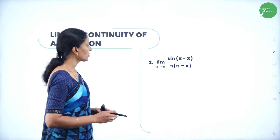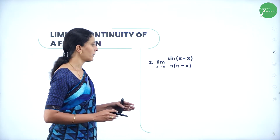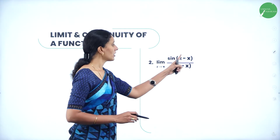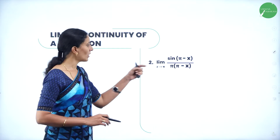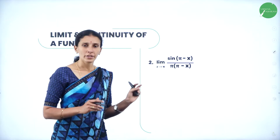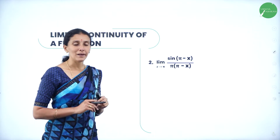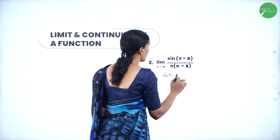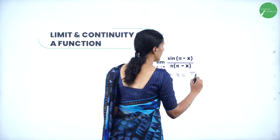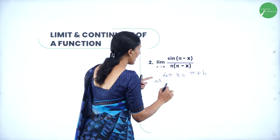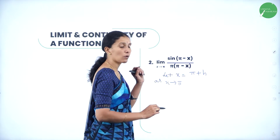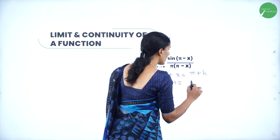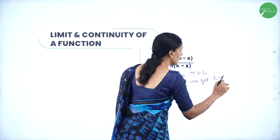Next question: limit of sin(π − x) / (π · (π − x)) as x tends to π. If x tends to π, this becomes 0/0 form. So here I am replacing x with π + h. Let x = π + h. As x tends to π, putting x = π gives h = 0. Therefore as x tends to π, we get h tends to 0.